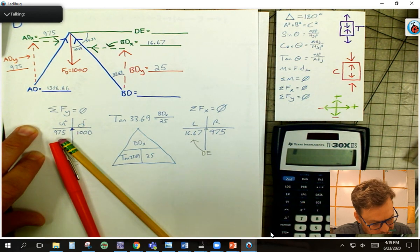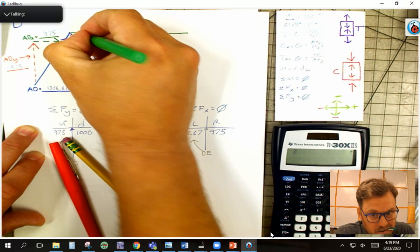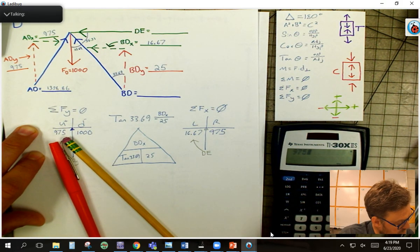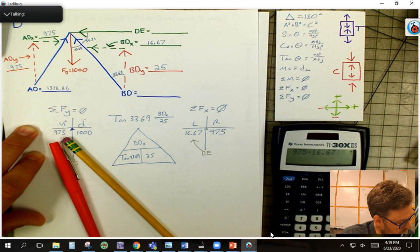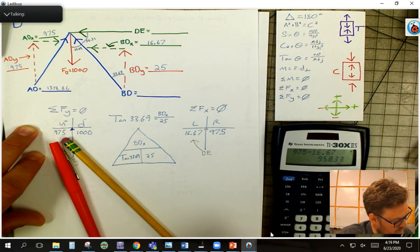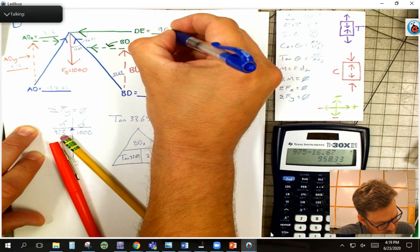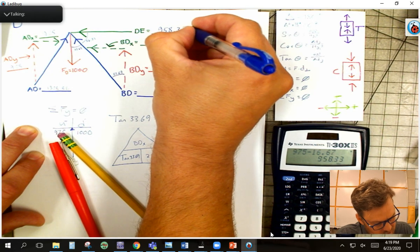So I can go ahead, take my arrow, go to that, and I can say 975 minus 16.67, and I get the value of that, which is 958.33.